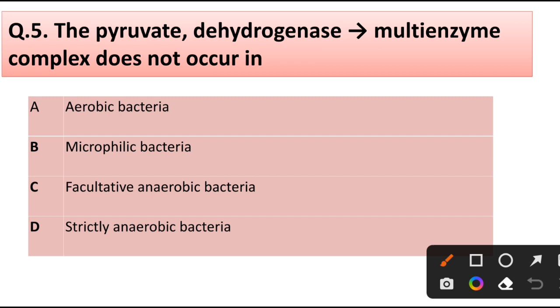Question number 5. The pyruvate dehydrogenase multi-enzyme complex does not occur in: aerobic bacteria, microphilic bacteria, facultative anaerobic bacteria, or strictly anaerobic bacteria. Correct answer is option B, microphilic bacteria.